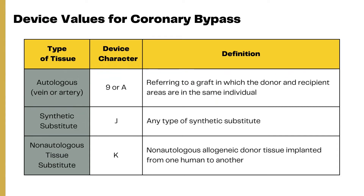When we talk about bypass — specifically coronary artery bypass procedures or CABG procedures — there are usually three choices for the device value. The first is autologous, meaning autologous venous or arterial tissue, which refers to a graft obtained from another body part of the same patient. The second device value is synthetic substitute, which is any type of artificially prepared graft material. The third is non-autologous tissue substitute, which refers to donor tissue implanted from another individual. It could be a vein or an artery, and these are the device values you will come across in coronary bypass procedures.